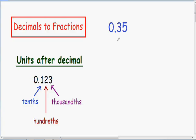Here we have 0.35. The important thing to look at is your last unit all the way to the right of the decimal. Notice this last unit is two units to the right of our decimal.